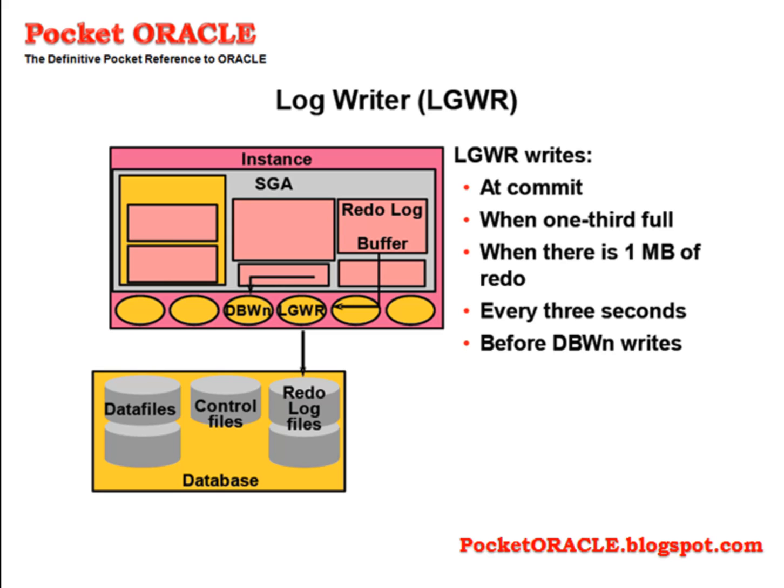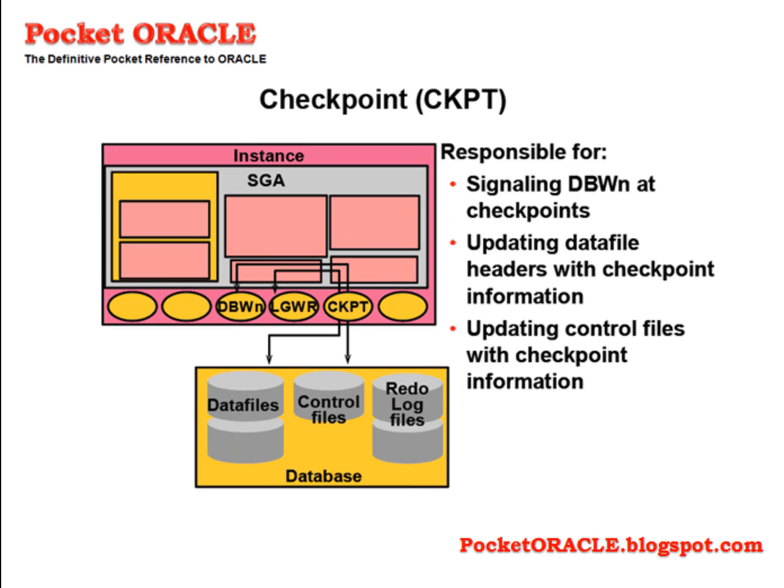LGWR also writes every three seconds and before DBWN writes. The CKPT process is responsible for ensuring that, from time to time, the instance is synchronized with the database. In principle, the database is always out of date — there will be changes applied in memory that have not yet been written to the data files by DBWN, though the changes themselves will have been streamed out to the online redo log files by LGWR as they happen. There are occasions when it is necessary to force a write of all changed data from the database buffer cache to the data files to bring the database up to date. The CKPT process controls the frequency of this and also updates data files and the control file with checkpoint info.